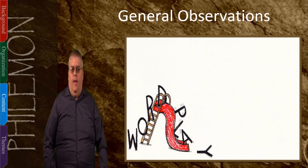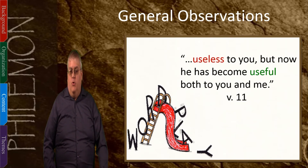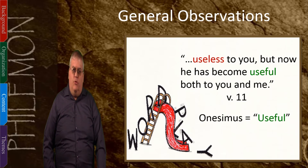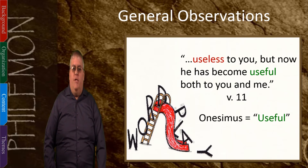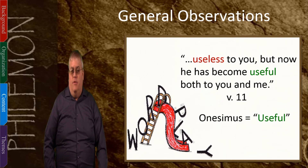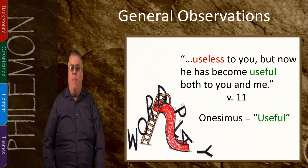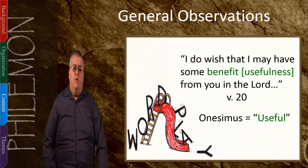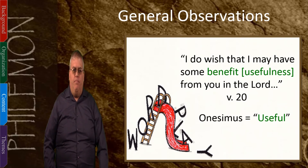I also want to point out a wordplay or pun that Paul used. In verse 11, Paul wrote that Onesimus was useless to you, but now he has become useful both to you and to me. This is a wordplay because the meaning of the name Onesimus is 'useful.' So Paul was saying that though Onesimus used to be useless, now he is living up to his name. It illustrates the fact that by converting to Christ, Onesimus now lived up to who he was named to be. Paul used his conversion as an argument that Philemon would have great benefit by welcoming him back as a brother. In verse 20, Paul also used a verb related to the name Onesimus when he asked to have some benefit — some usefulness — from Philemon.